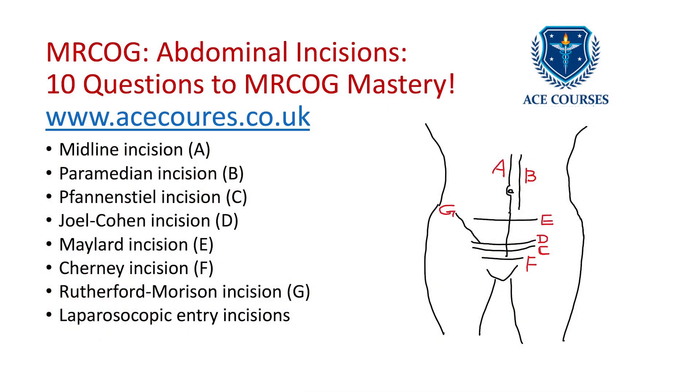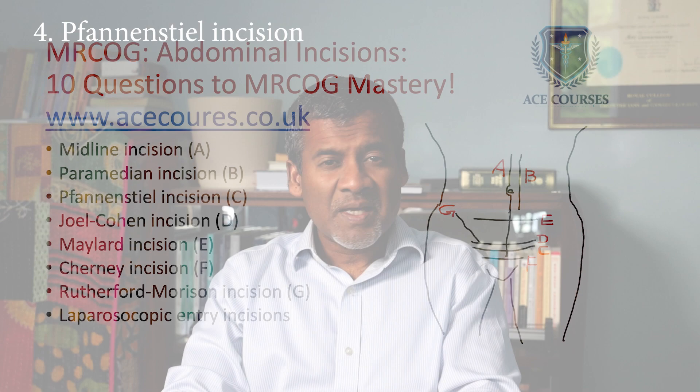Question four: what is a Pfannenstiel incision? This is marked C in the diagram. It is a transverse, slightly curved incision about 2 centimetres above the pubic symphysis and about 10 to 15 centimetres long. It is what we commonly use for caesarean section and for gynaecological laparotomies. The trouble with this incision is that it doesn't give good access to the pelvic sidewalls and the upper abdomen.